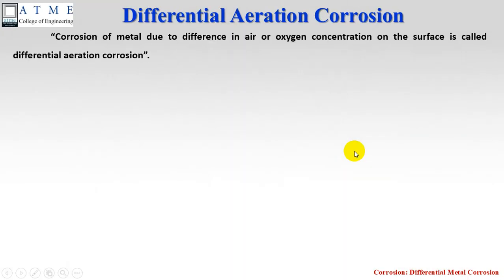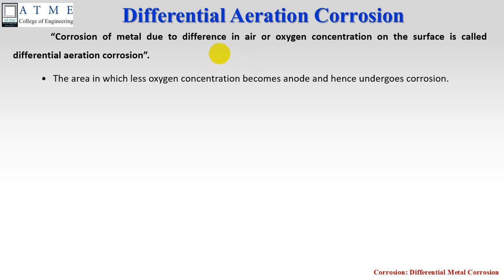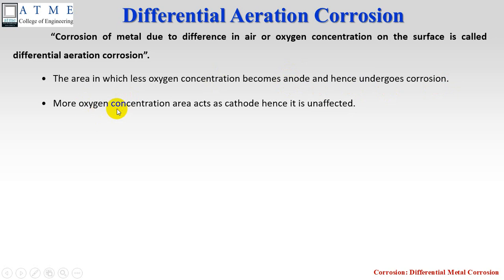Differential aeration corrosion is a corrosion of metal due to the difference in air or oxygen concentration at a particular metal surface. When the metal is exposed to two different oxygen concentrations, the area which has less oxygen concentration becomes the anode. Once it acts as anode, it undergoes corrosion. The metallic surface which has more oxygen concentration acts as cathode and remains unaffected.